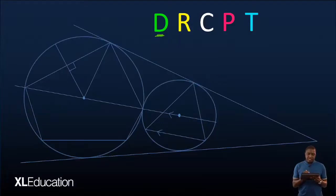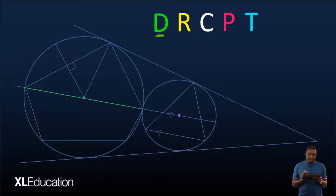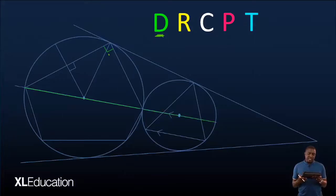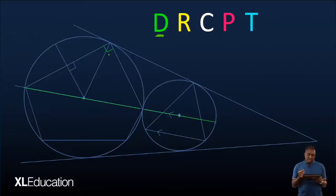Starting with D — we look at all the diameters in this diagram. There is the diameter highlighted in green, and this gives us a right angle here. There is another diameter in the smaller circle, but this one is not subtending any angle, so we can just move on.